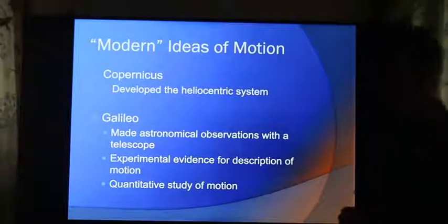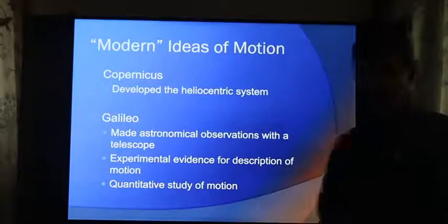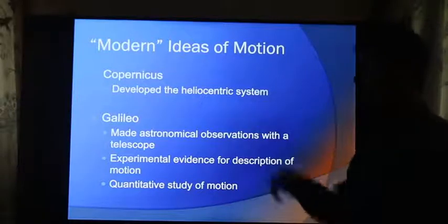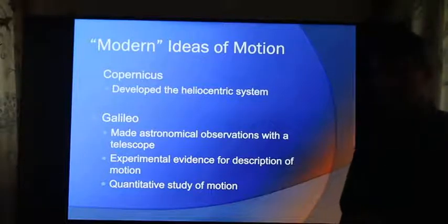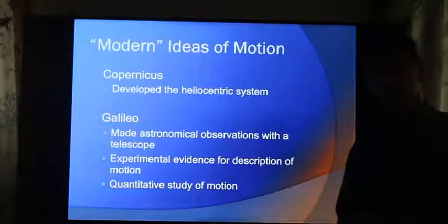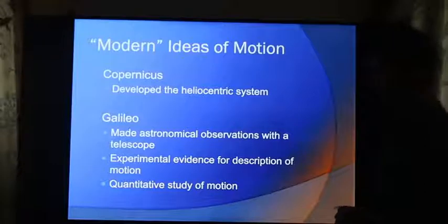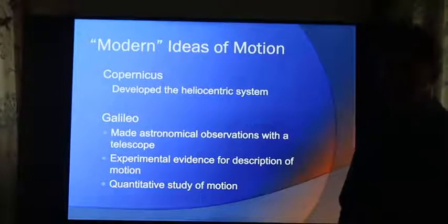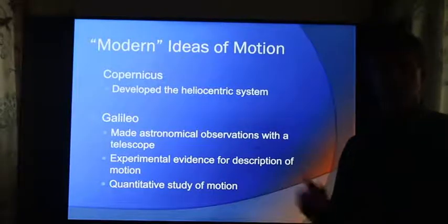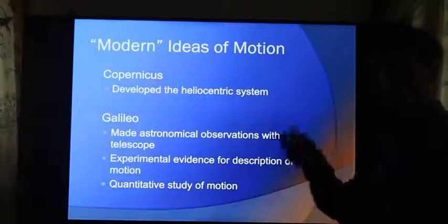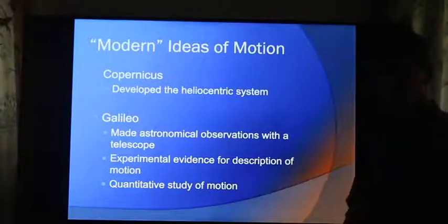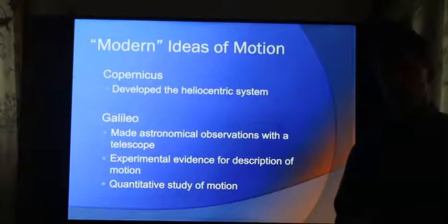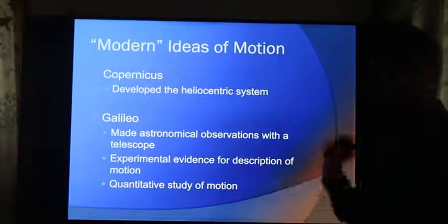The modern ideas of motion, which eventually overcame the Greek ideas of motion, started with Copernicus and his idea of a heliocentric system. Copernicus couldn't explain why the parallax was not observed in the stars, but he reasoned that given the simplicity of having the heavenly bodies go around the sun rather than the earth, and the ease of calculation with this system, it just seemed to him to be a more logical reality than the more complicated Ptolemaic system with everything going around the earth.